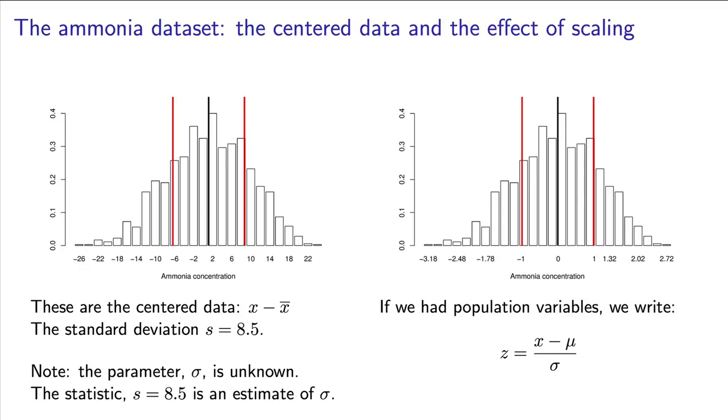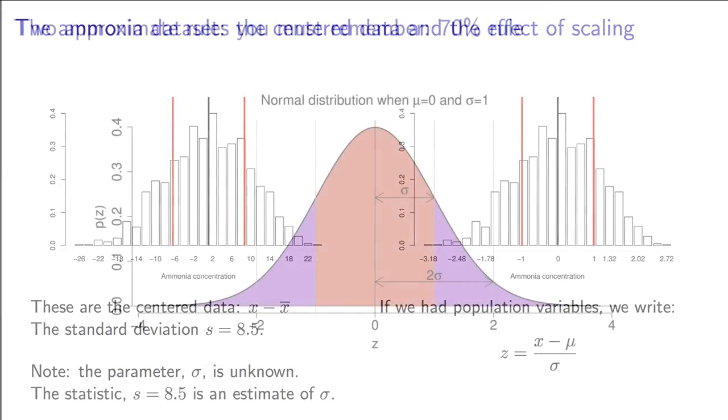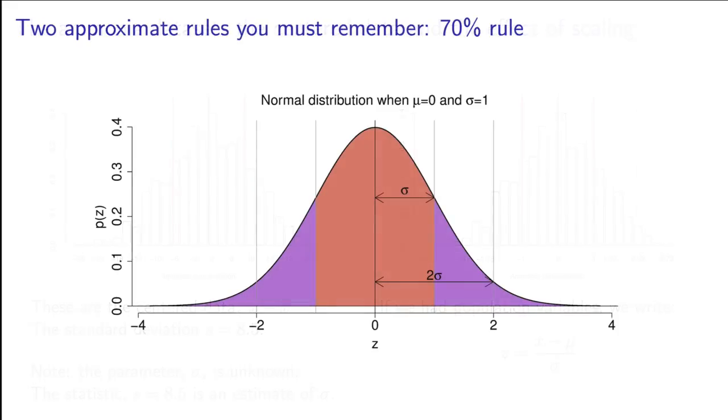Let's go back to the normal distribution, and I want to point out two features you must remember. You should never have to look these up. The area under a normal distribution, all the way from minus 1 standard deviation to plus 1 standard deviation, is about 70%. That is, the vast majority of our data lies in this range. There is 15% left over in the left tail, and 15% remaining in the right tail.